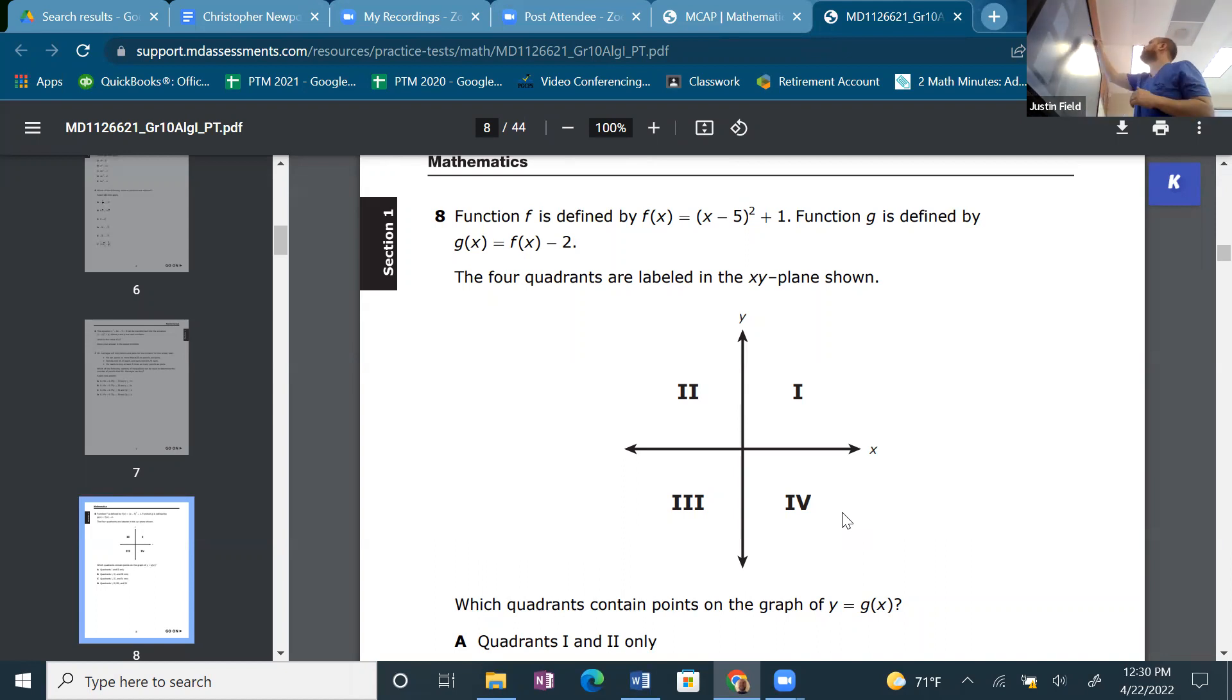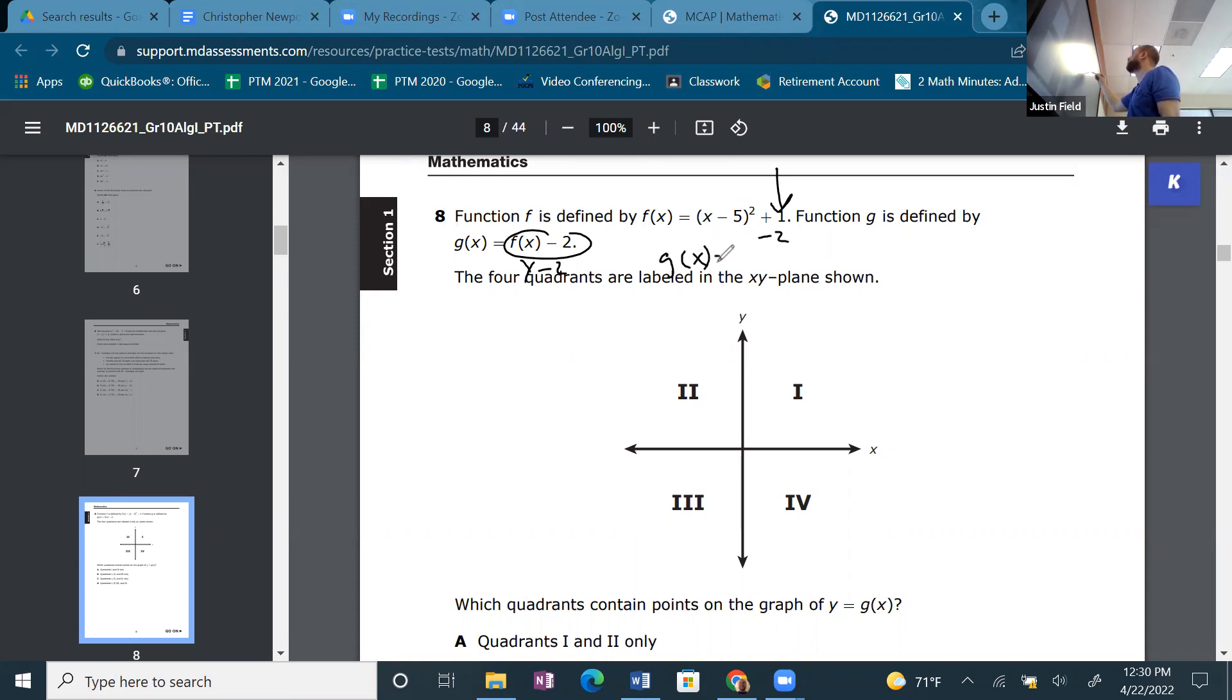So just like on the first question of this test, I know f(x) represents a y-coordinate. We're taking those y-values and we're subtracting 2. Okay, so what's the y-value of the vertex? It's 1. So we're going to subtract 2 and that gets us g(x). It's just that simple.